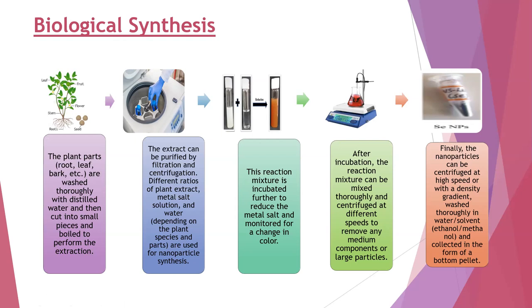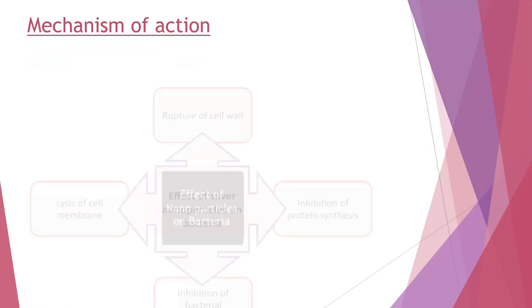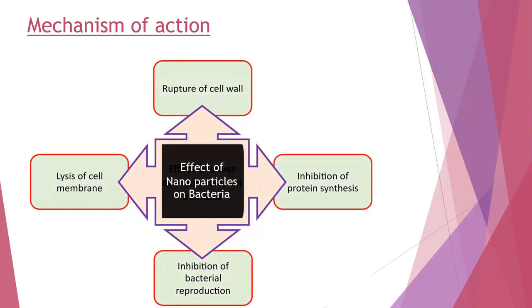Regarding the mechanism of action — we mostly check the antimicrobial activity. There are different methods by which nanoparticles perform antimicrobial activity: they rupture the cell wall of bacteria; they can inhibit protein synthesis so bacteria cannot grow; they can inhibit bacterial reproduction; and they can lyse the cell membrane so bacteria cannot survive and must die. So there are different mechanisms of action of nanoparticles against bacteria.